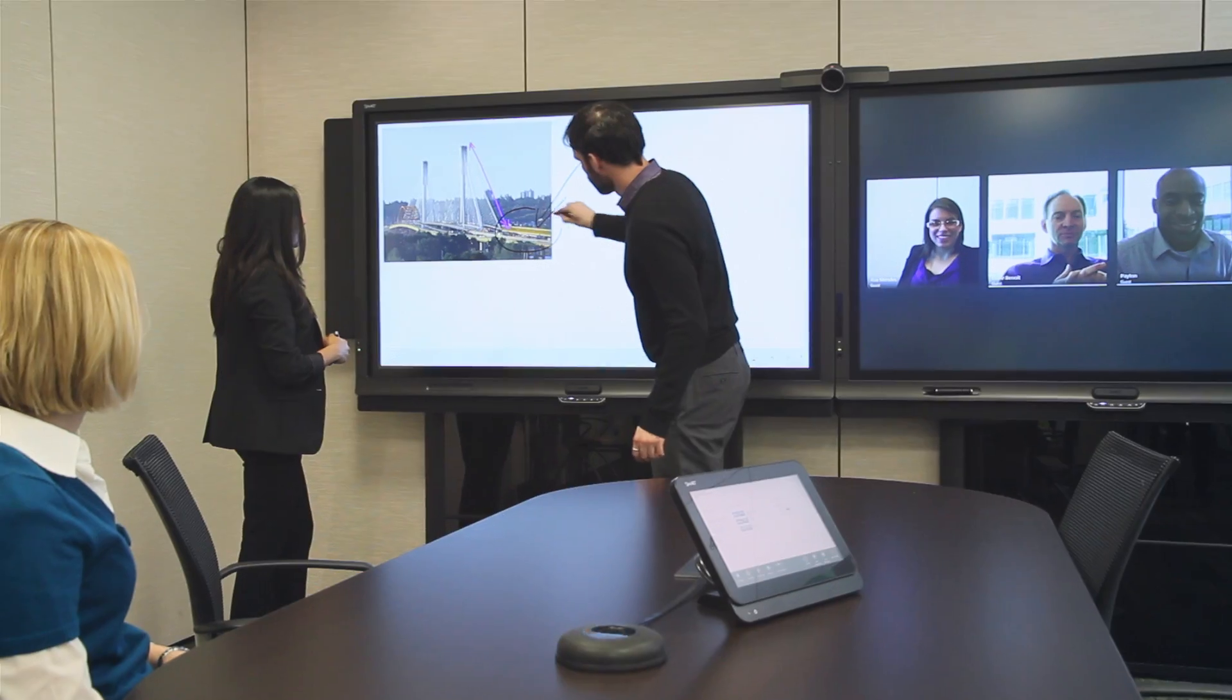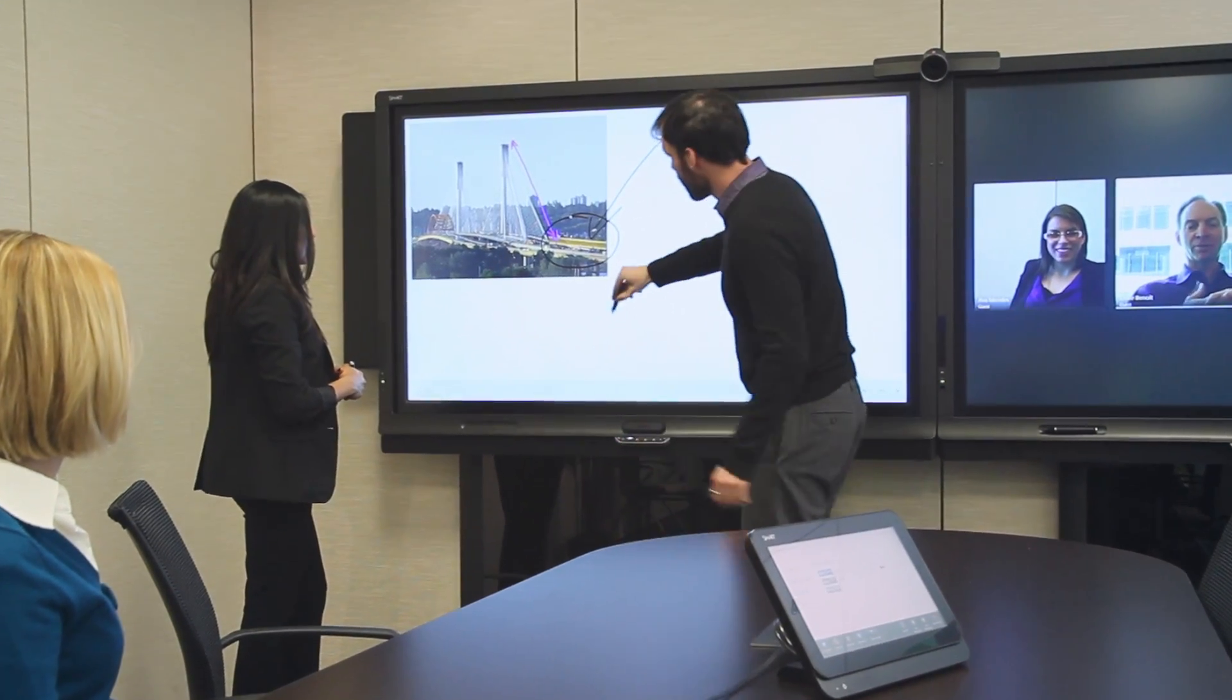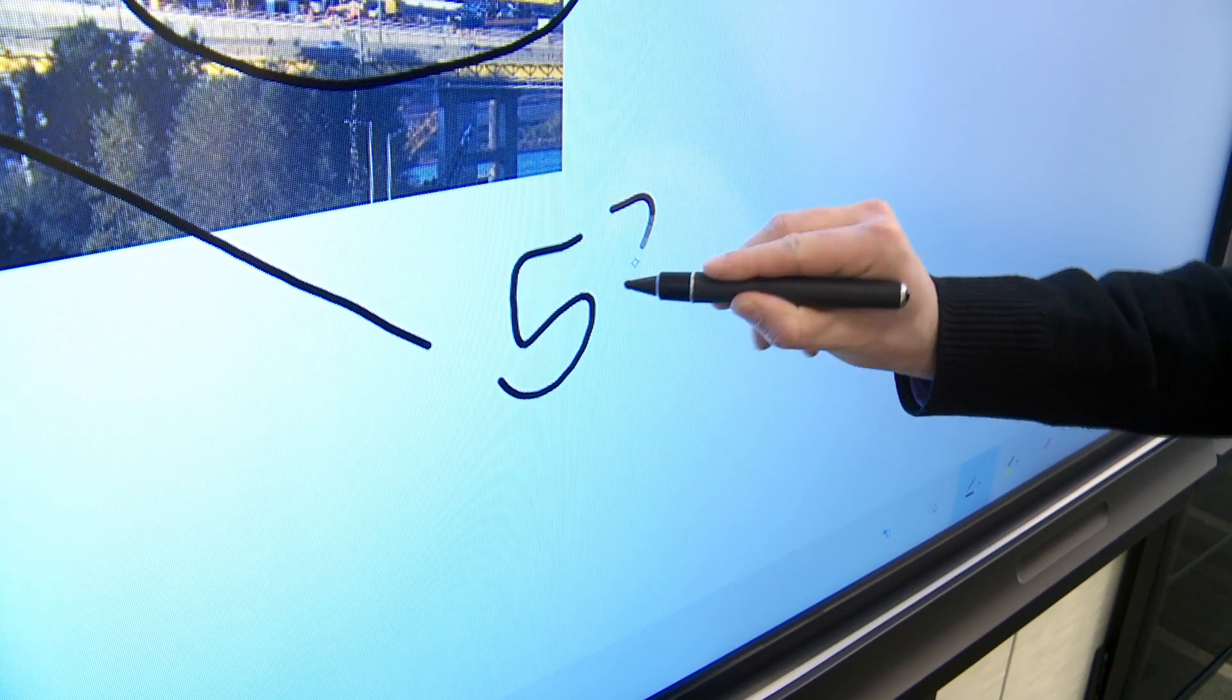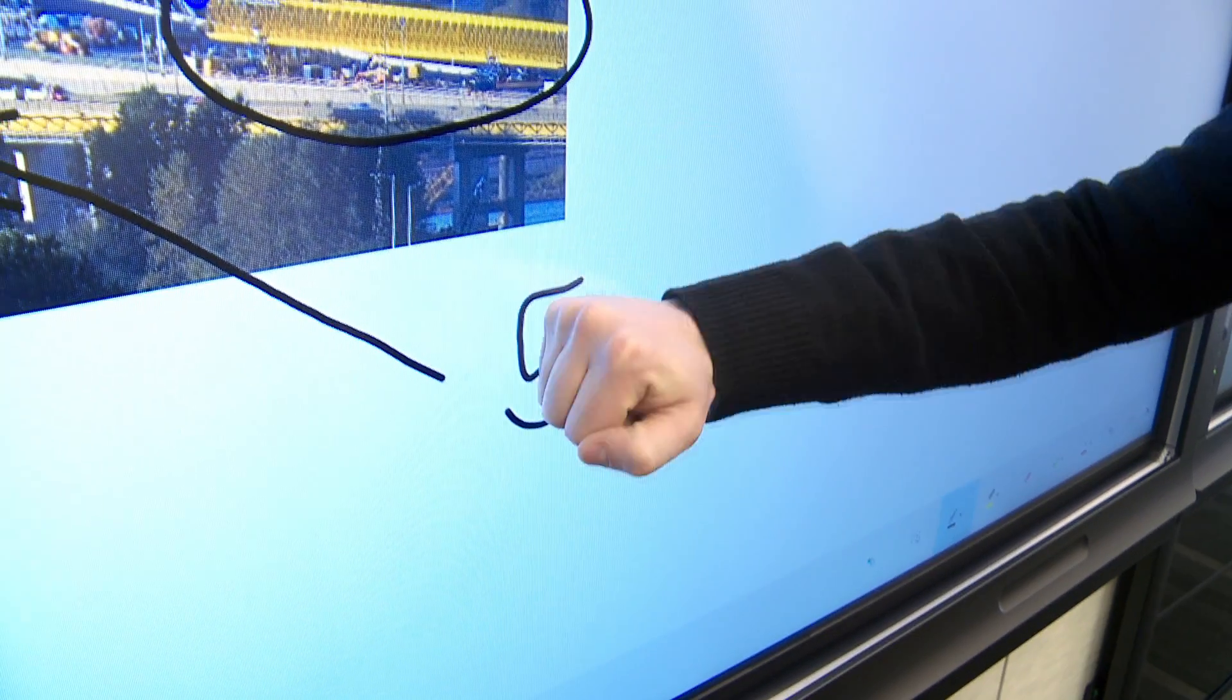And it recognizes the difference between a pen, finger, or palm, so you can intuitively write and erase. You can also easily change ink color.